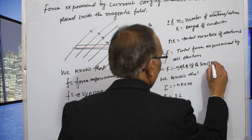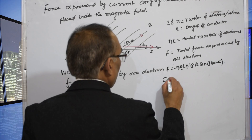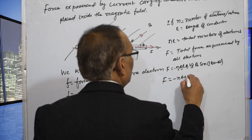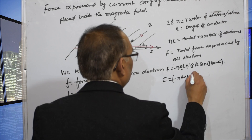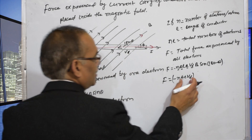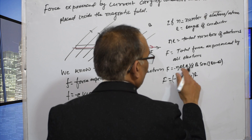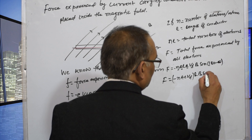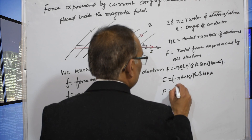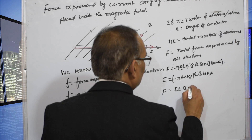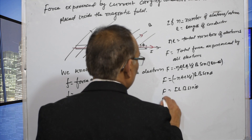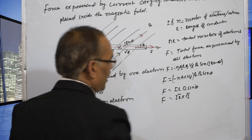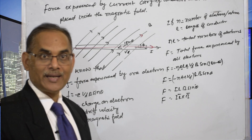Since the angle is 180 degrees minus theta, and sin(180 minus theta) equals sin theta, the total force simplifies to F equals I L B sin theta. Therefore, the force is equal to I L cross B. In this way, we can find the force experienced by the current carrying conductor.